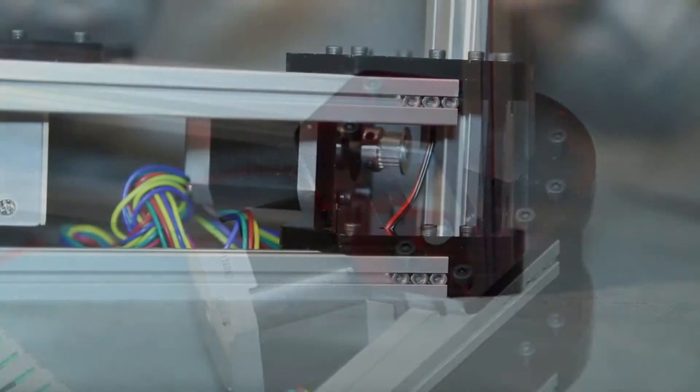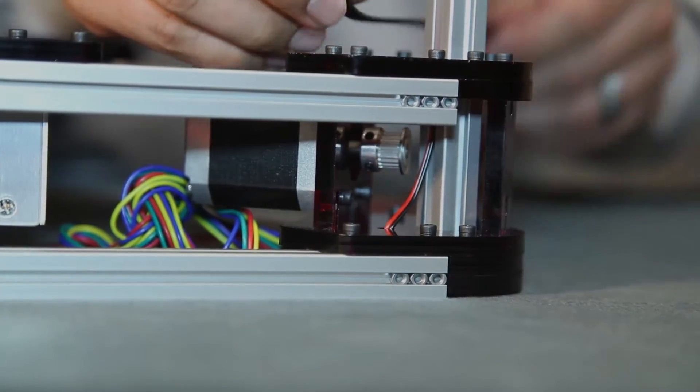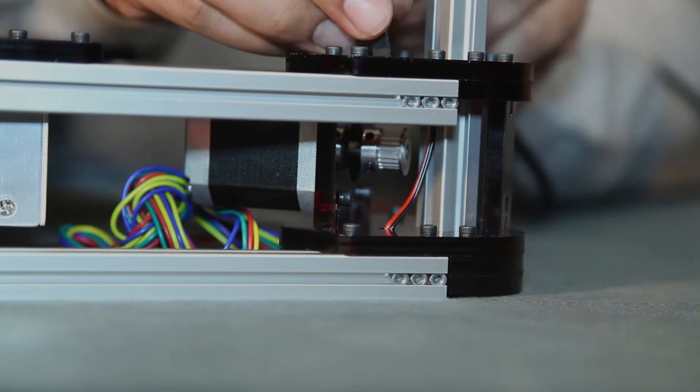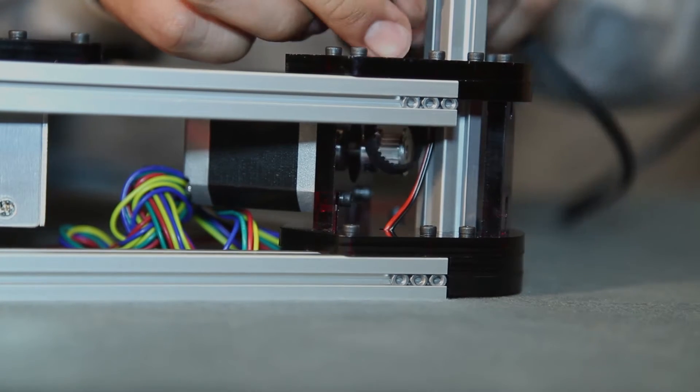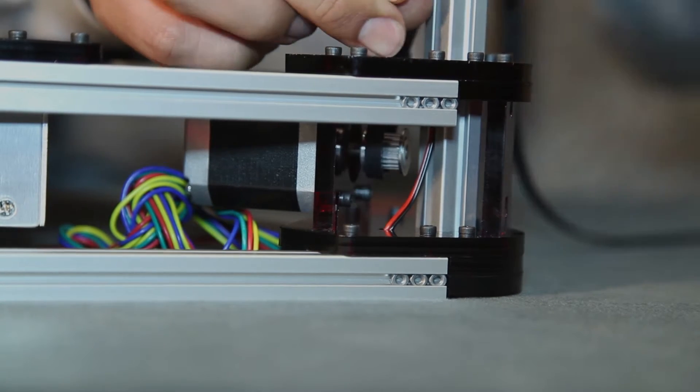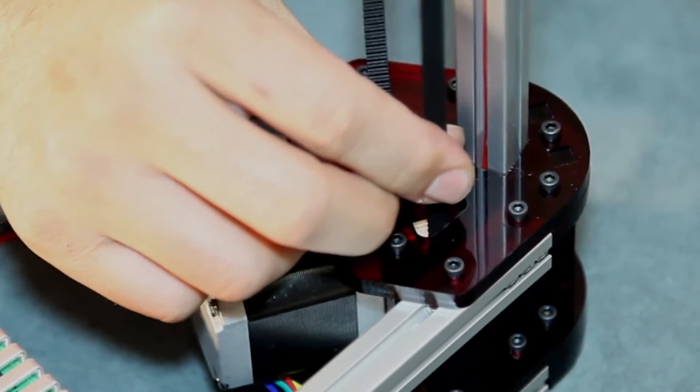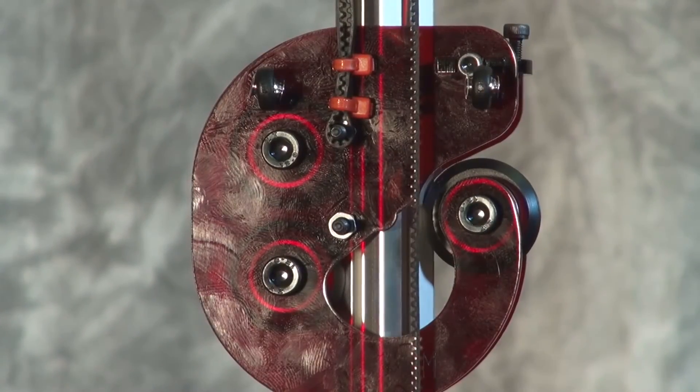Now we're going to take the belt and feed it through the lower pulley, feeding it through this open hole in front of the pulley. So now we're going to attach the belt to the bottom screw.